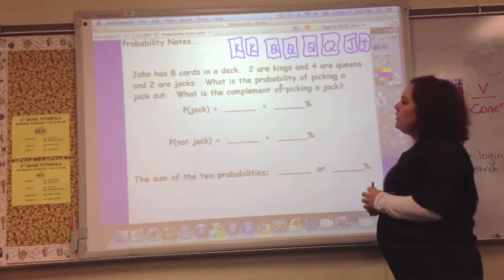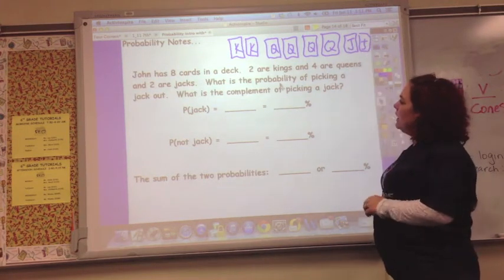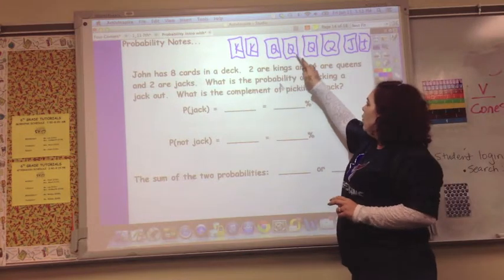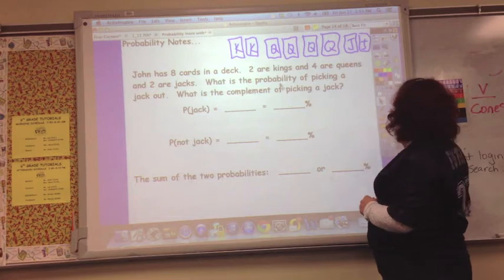We're going to work a problem situation. John has 8 cards in a deck. So these are the cards, and 2 are kings, 4 are queens, and 2 are jacks. What is the probability of picking a jack out?